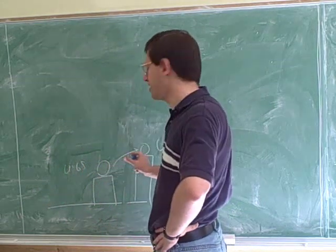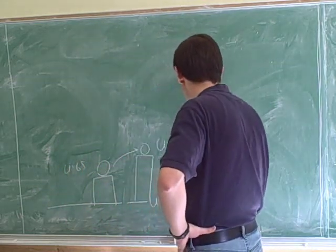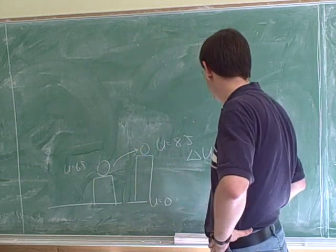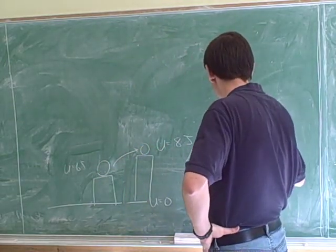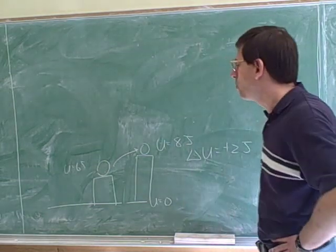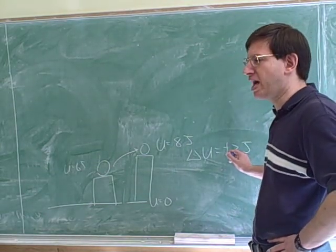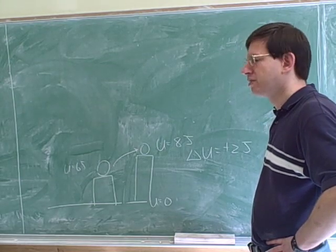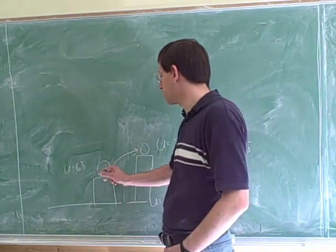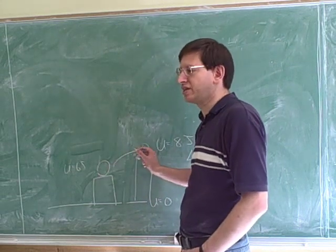But let's say we go from here to here. What would delta U be when we go from here to here? Two joules. Positive two joules because we'd be moving up. What's the significance of that? It would take two joules of work to move the object from here to here.